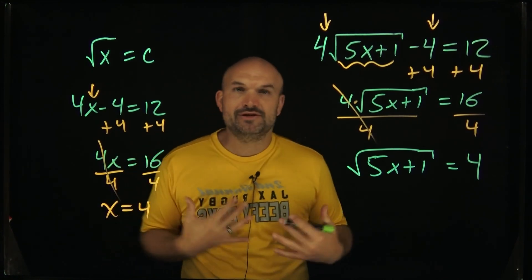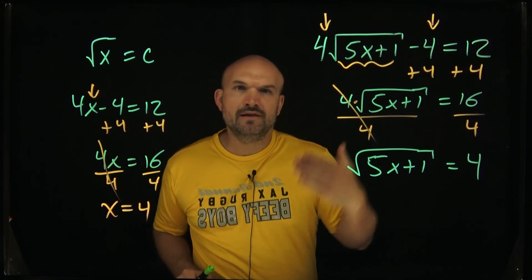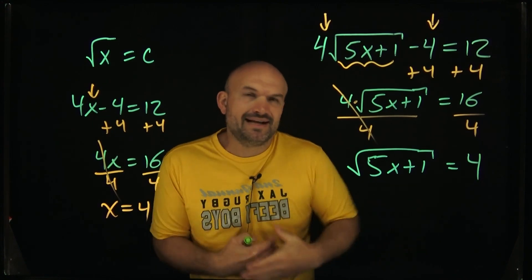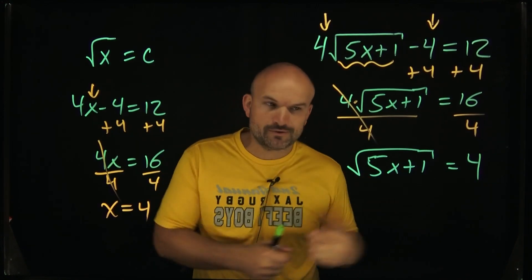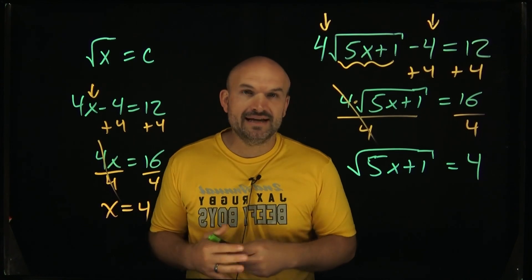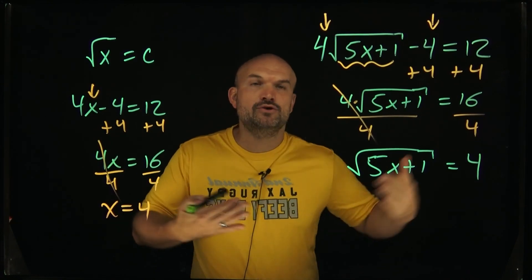So one of the things that we got to make sure we understand is, how do we undo the taking the square root of something? And it's the same thing if you took the cube root or the fourth root. How do we undo that? And the inverse operation of that is going to be squaring or raising to a power.